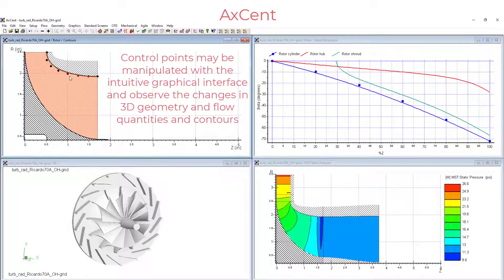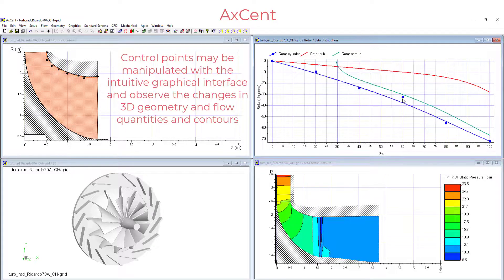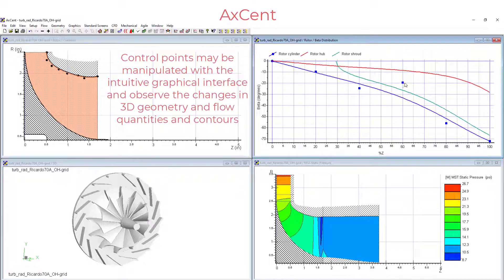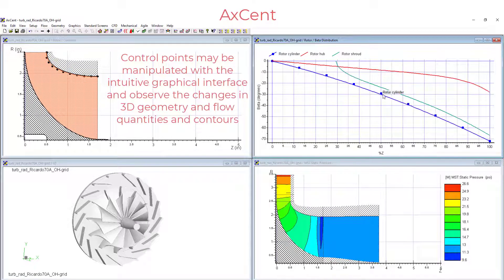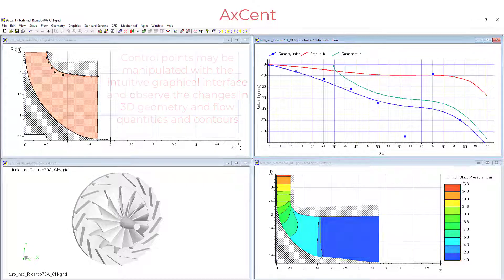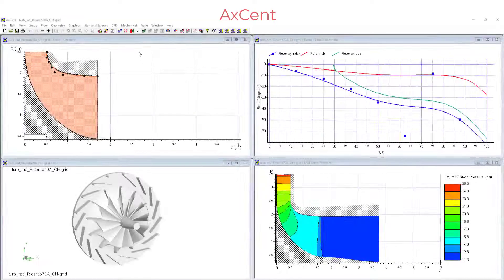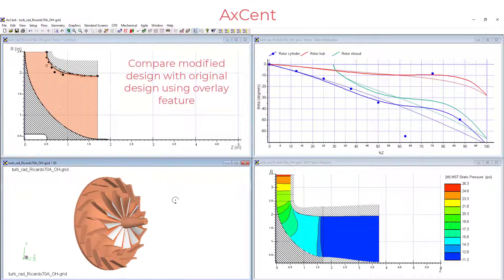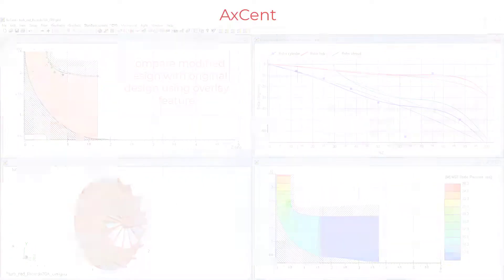Here, in live time, we can see how changing control points or Bezier distributions of a design parameter impacts a certain design output parameter. We can also overlay our designs as we move through the design process to understand how the distributions changed.